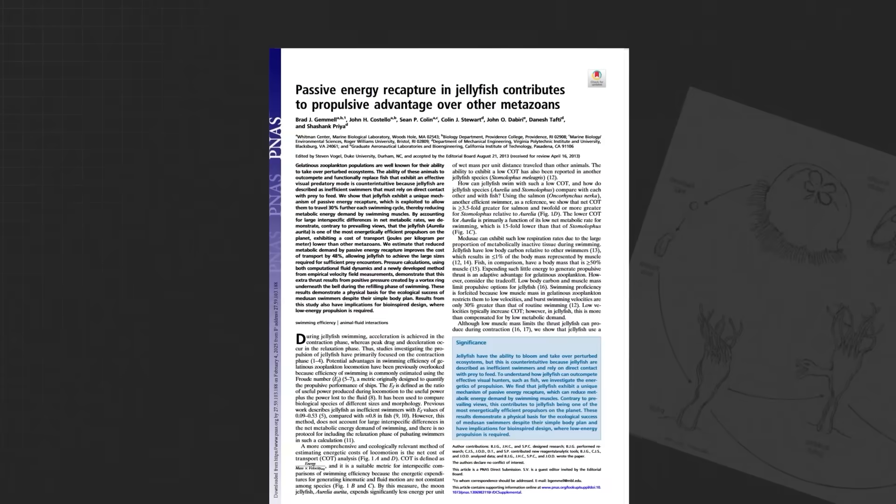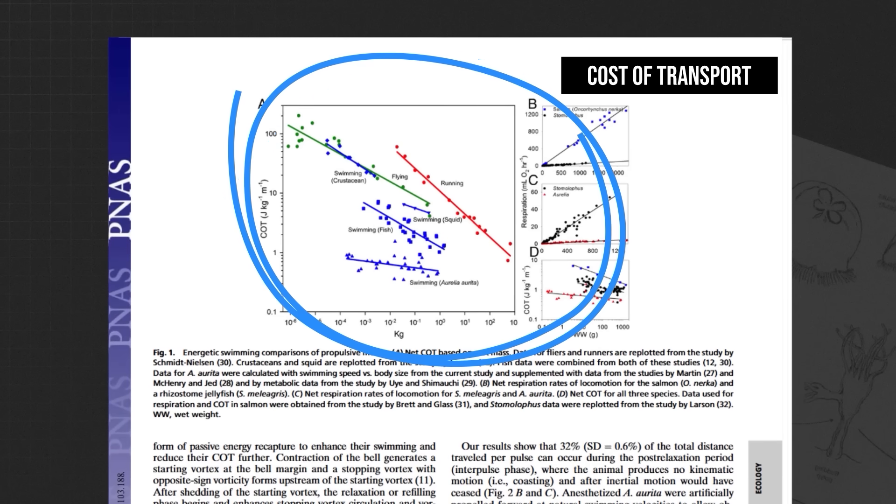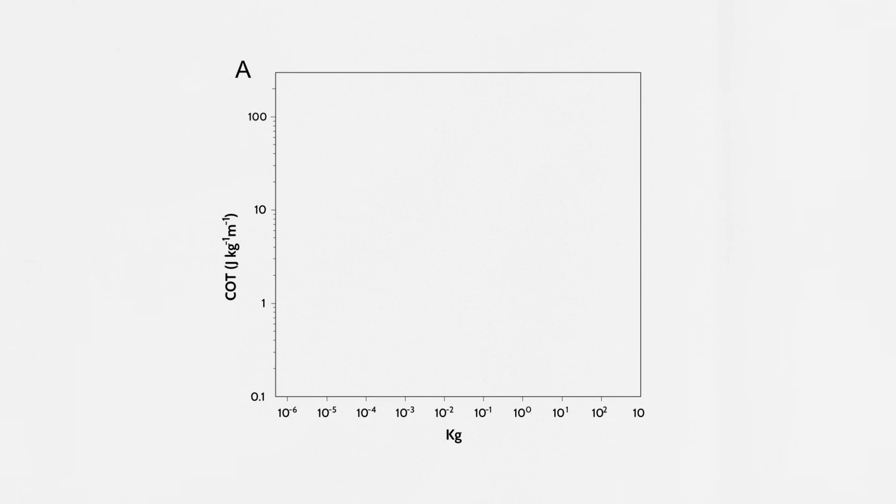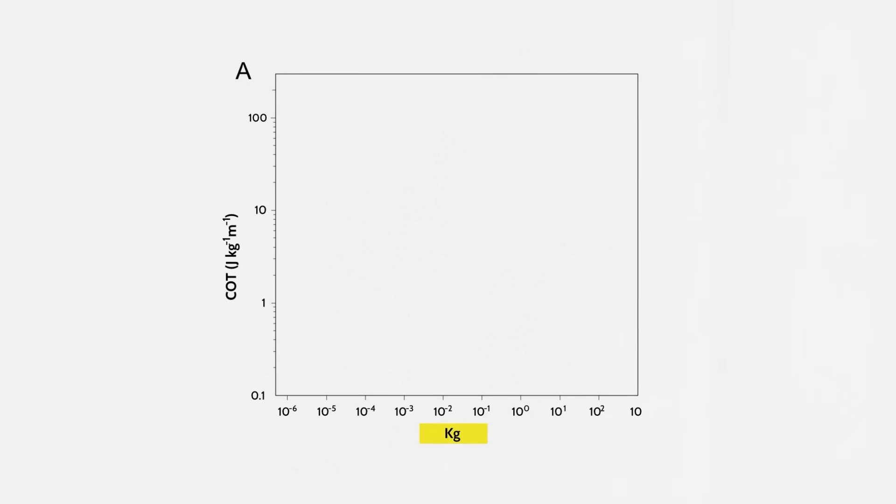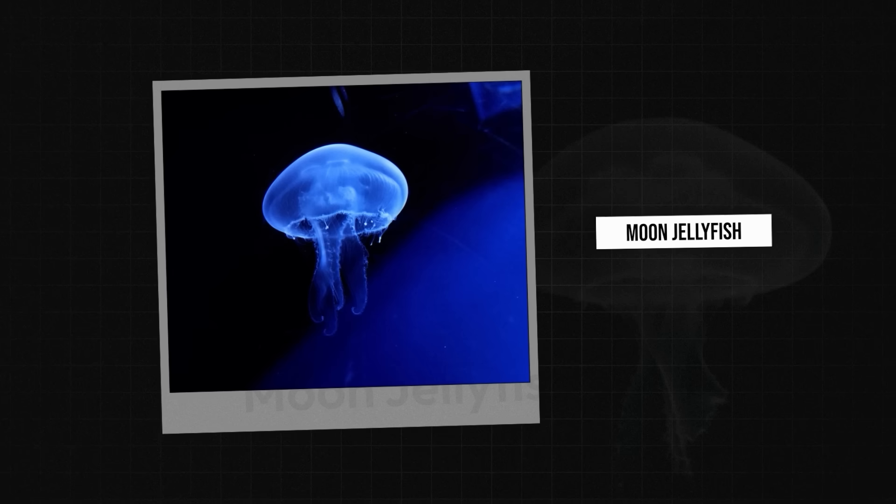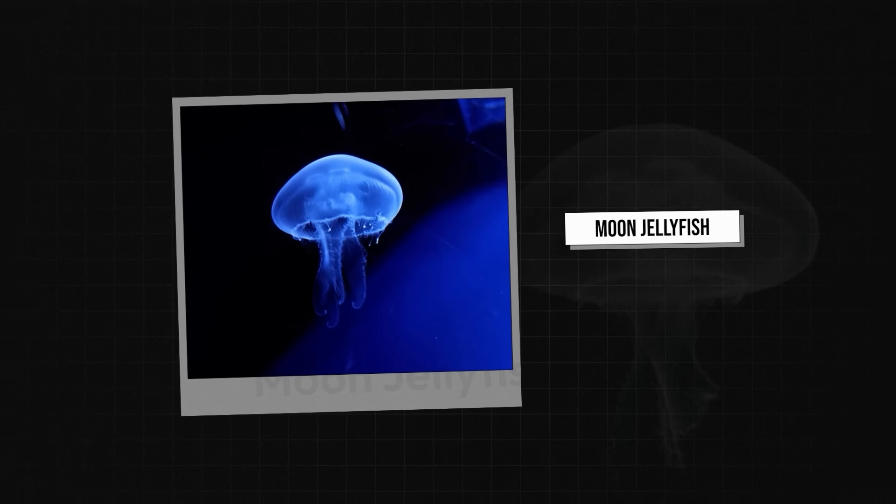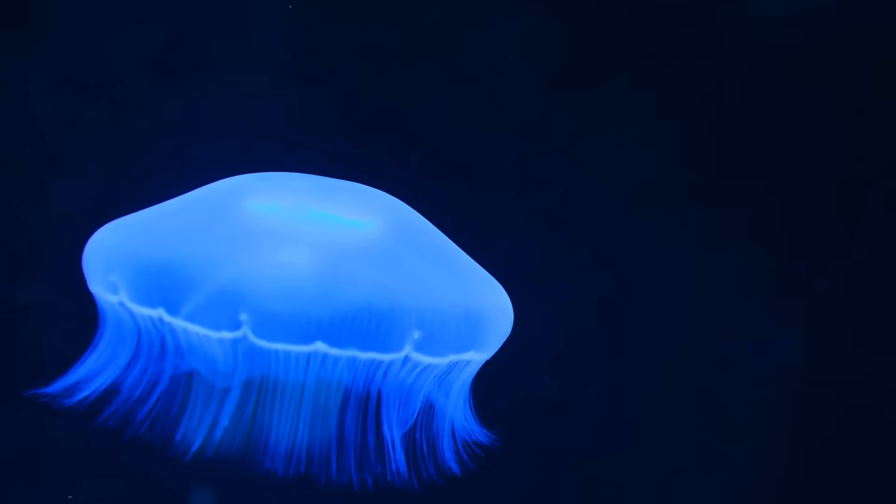There is a great piece of research which compares something they call the cost of transport for all kinds of creatures. It essentially measures how much energy is used to move a certain distance, accounting for the weight of the animal. And in a study of thousands of running, flying and swimming creatures, the moon jellyfish came out on top, with an exceptional energy efficiency rating. It's easy to see why engineers would want to copy something in nature that has such an incredibly low cost of transport.